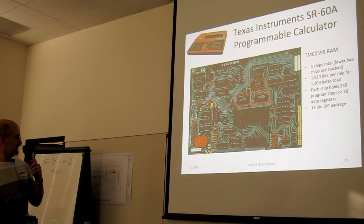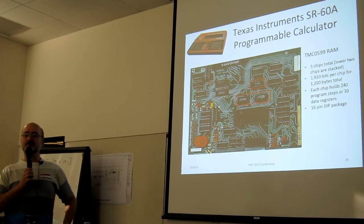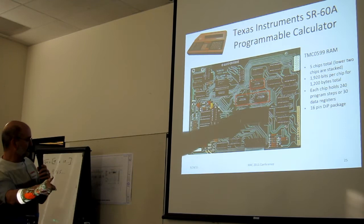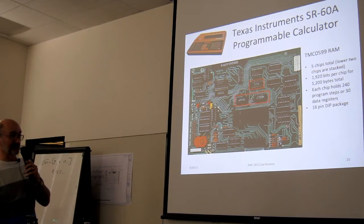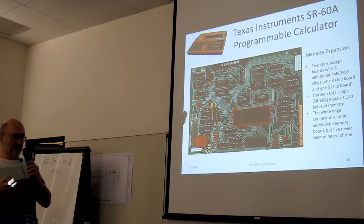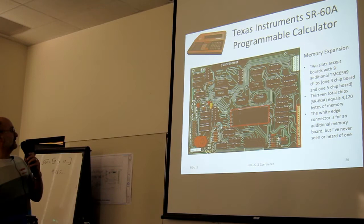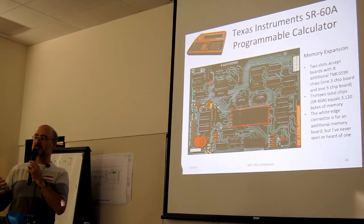Here are the memory chips, TMC0599. Each one is 1920 bits for 1,200 bytes total. Each chip is 240 program registers, or program steps, or 30 data registers, and they're in 16-pin packages. So these two are stacked, and that's a singleton, so there are five chips total. And these are still socketed. There are slots for two memory boards that have more of those chips on them. Now, oddly, there are two boards, and one has three chips and one has five chips. Why they don't each have four is another one of these enduring mysteries for the ages. At the side here is a wide-edge connector for an additional memory board that I've heard of, but I can't find anyone that's ever actually seen one. So it may or may not have ever existed.